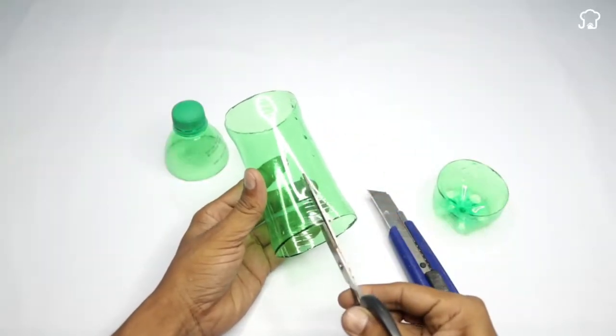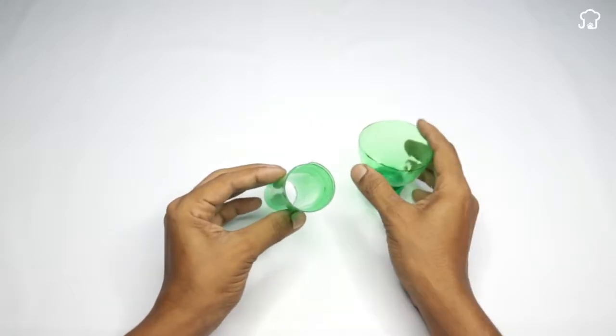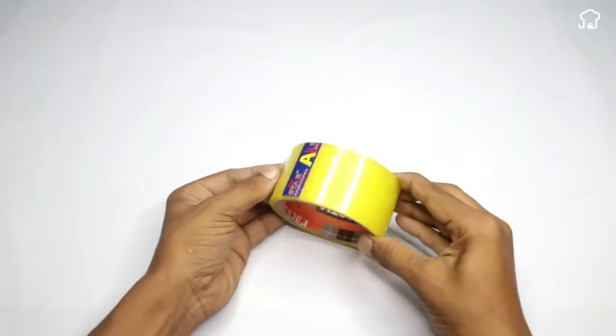Next, we use scissors to cut the cylinder from the center of the bottle. Afterwards, we will wrap it in a roll, so that the end of the mouth of the bottle that we had cut can fit perfectly.